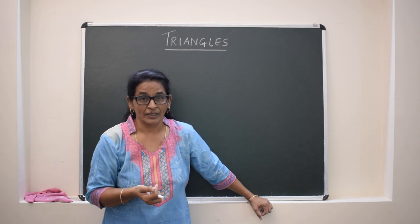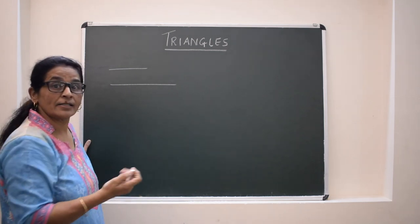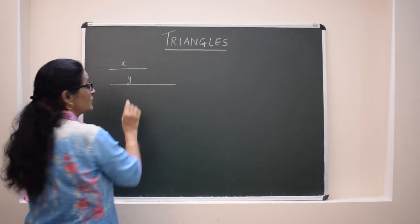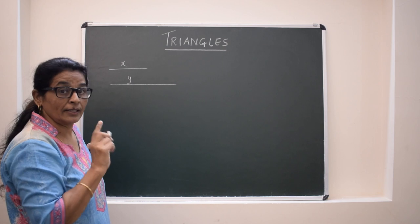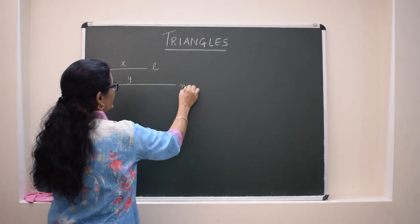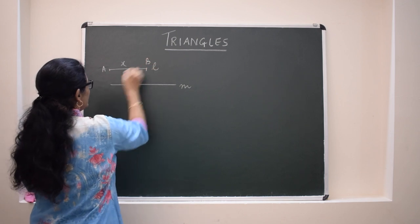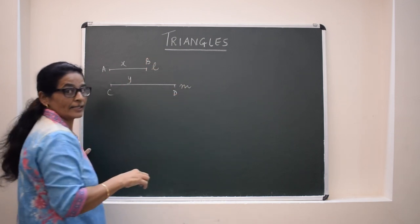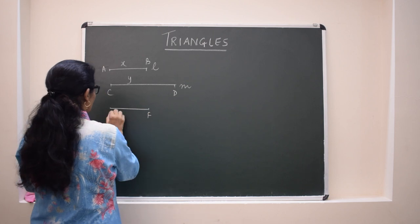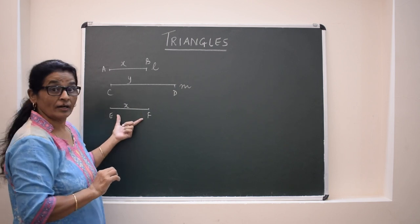But for similarity, if we observe any two line segments, since these are line segments, they are similar. But if we talk about congruency, then the lengths of these two line segments should also be equal, then only they will be congruent. We can say line segments AB and CD are similar. But if I draw another line segment EF whose length is also X, then we can say AB and EF are congruent.